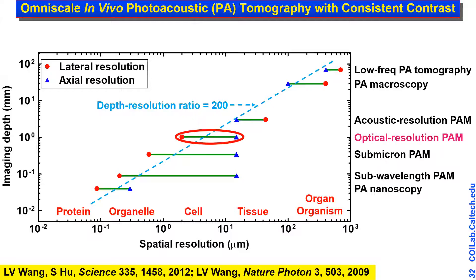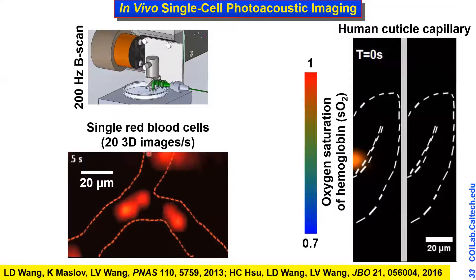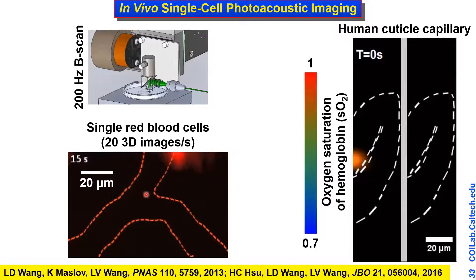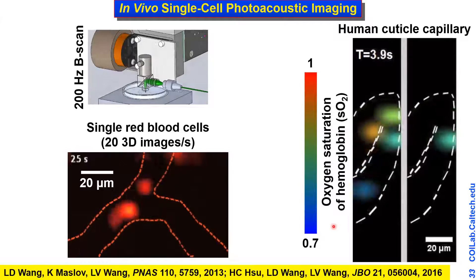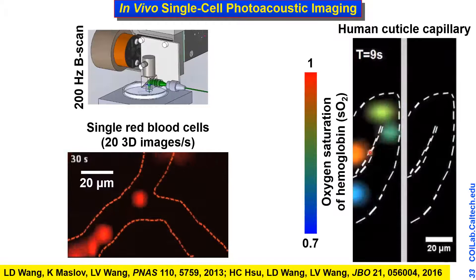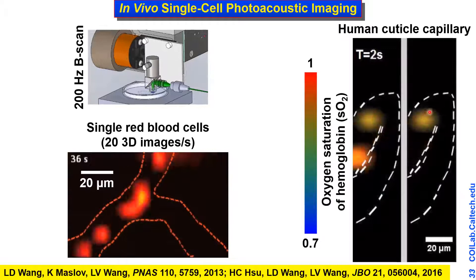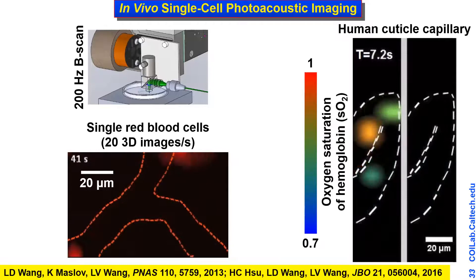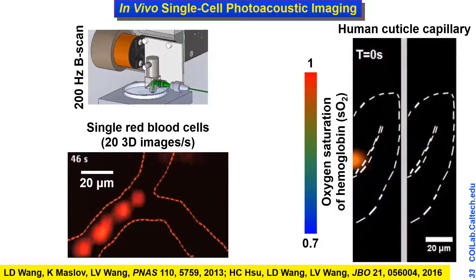Pushing the resolution to the optical resolution level, we give up penetration to about a millimeter. The system operates fast enough for real-time imaging, and we can see how red blood cells bifurcate — they group together depending on physiological needs. We can image humans, such as our own finger cuticles, using color to indicate oxygen saturation of hemoglobin. We can track a single red blood cell and watch how its color varies as oxygen is released.